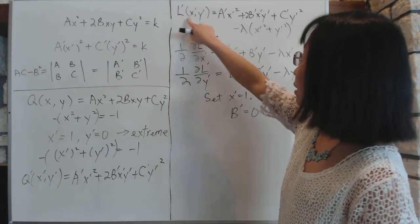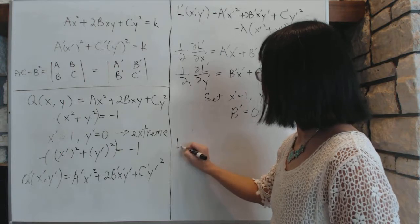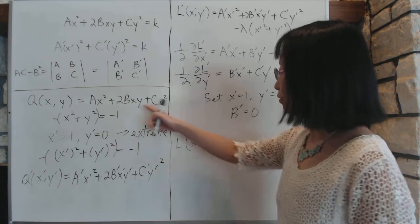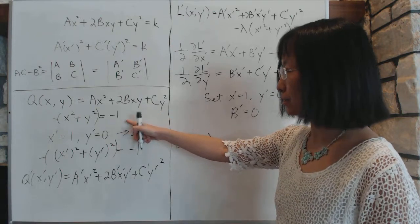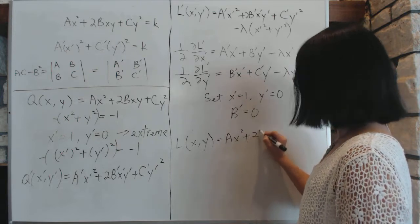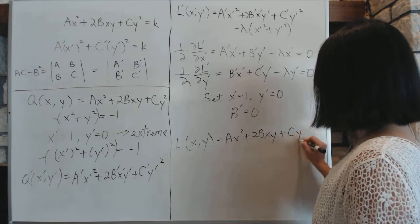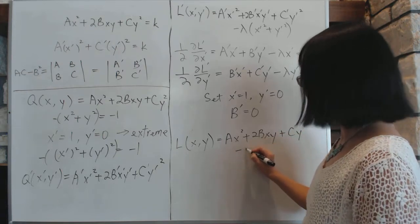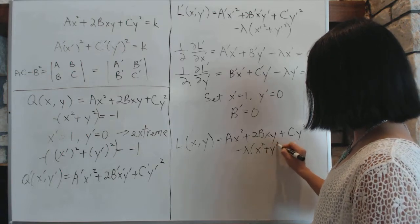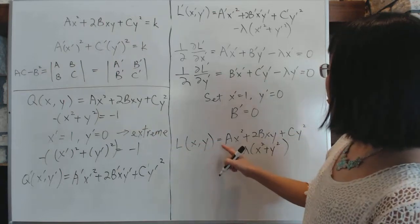Now this is the L prime equation for the Lagrange function, and we'll write down the original L. The original L function, which is based on this, L(x,y), and consider this thing as the constraint, is equal to copy this all down: ax squared plus 2bxy plus cy squared, and then minus lambda times x squared plus y squared. Now this is the old Lagrange's equation, and notice that this thing, when you turn the axis, will turn into this thing.